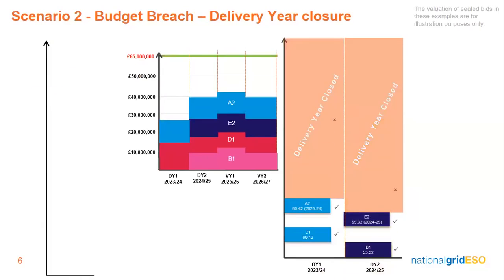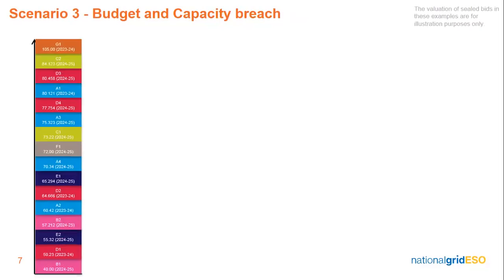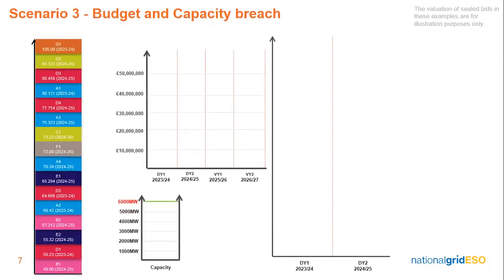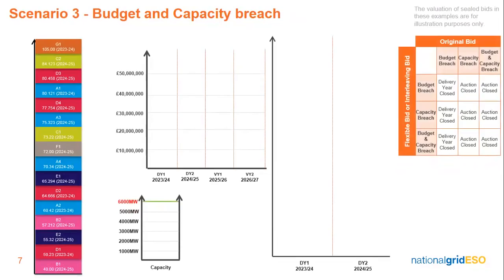Once both delivery years have closed, the auction is completed. Scenario 3: Budget and Capacity Breach. In this example, I'm going to introduce the capacity cap, which will be represented by the chart below the budget profile. I'm also going to introduce a graphic to the right to show what happens when a bid might breach the budget, capacity cap, or both, and the consequence of this.